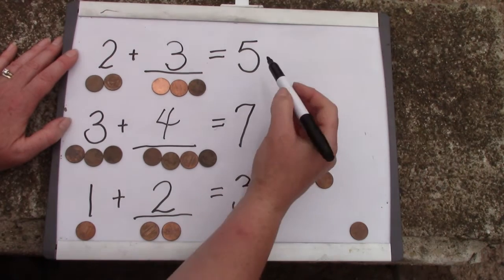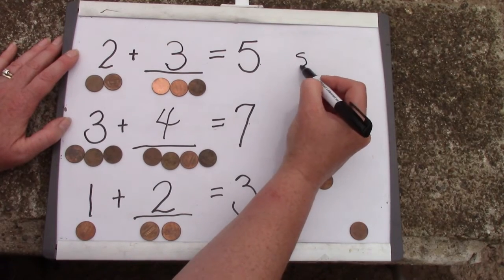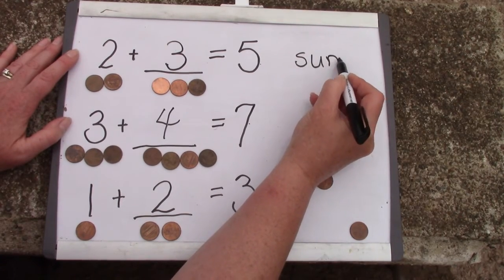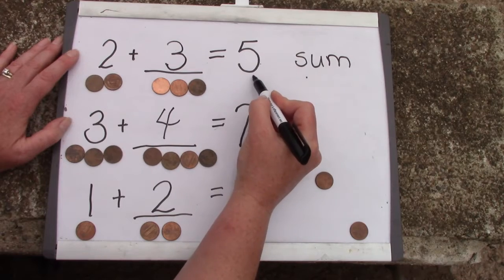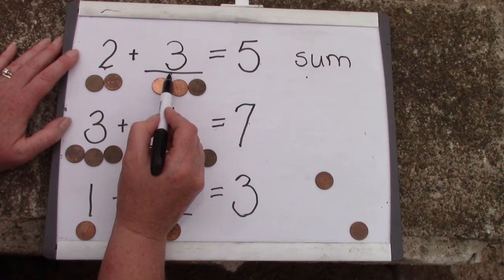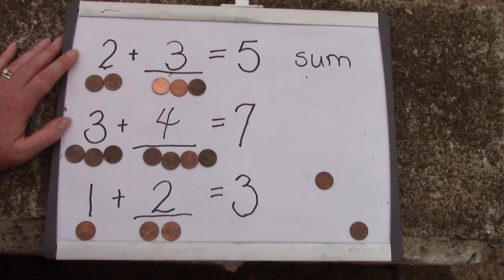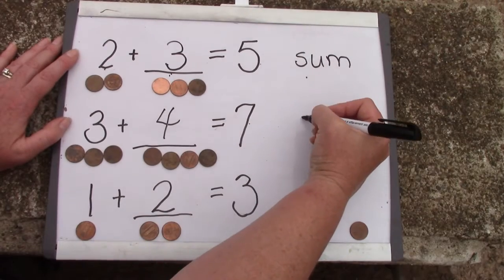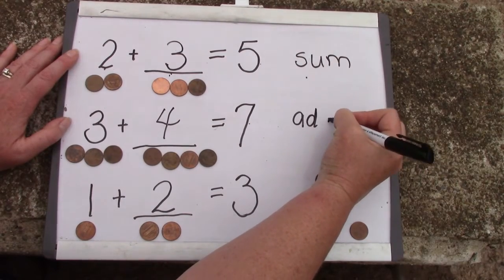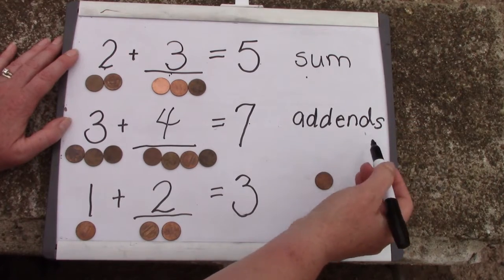Five, seven, and three are our sums. A sum is the answer in an adding problem. The two numbers that we're adding together are called addends. I'm going to write that down. Addends.